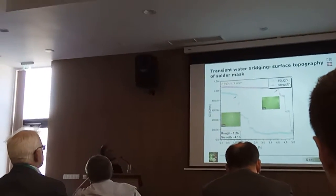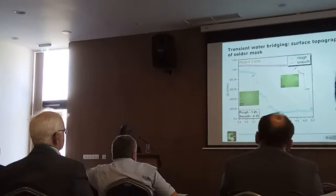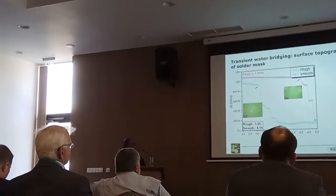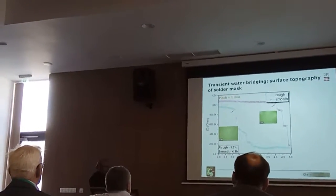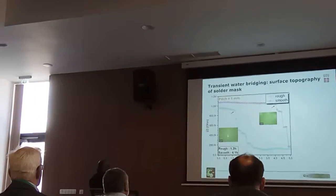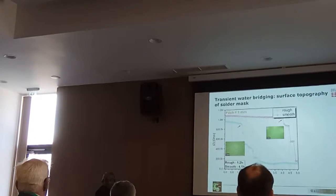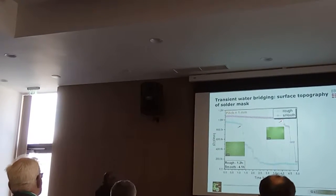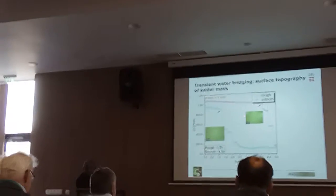Let me give you one example here. We placed an impedance sensor on top of a PCB surface, and while condensation was happening, we measured the impedance. If you look at the impedance drop for the rough surface, you can see that impedance is dropping within one hour of condensation. But if you look at the smooth surface, you can see that impedance is not dropping at the same rate. In both surfaces, the same amount of water layer is forming — but the way the water layer is formed on the rough surface and on the smooth surface is different.